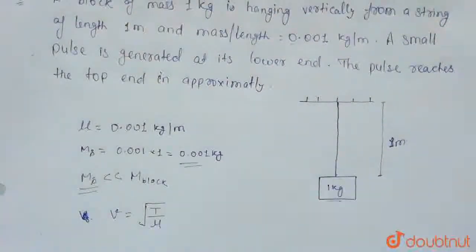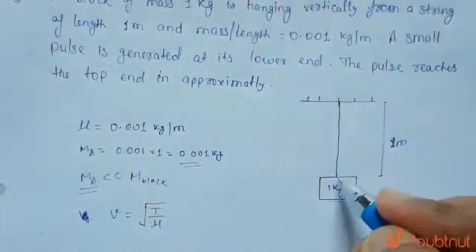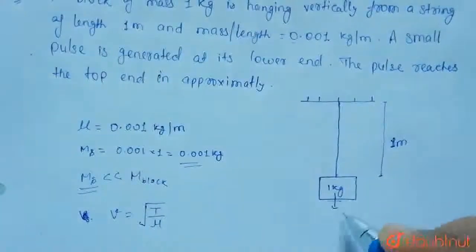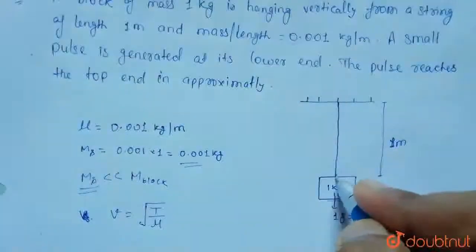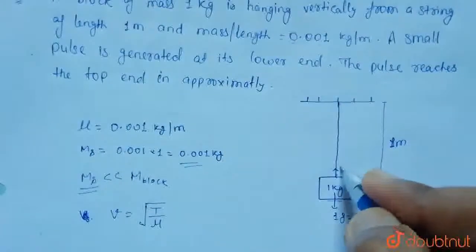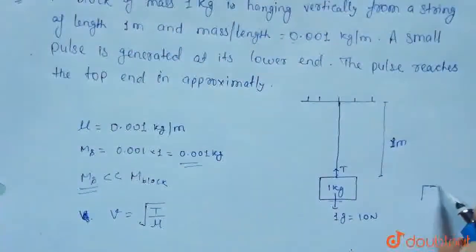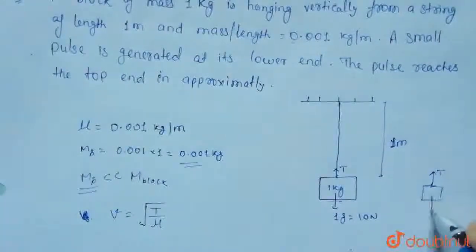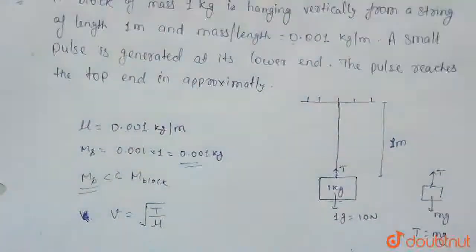इस string में tension कितना है? अगर block का FBD बनाएं, तो ऊपर tension T लग रहा है और नीचे mg लग रहा है, यानि 1g = 10 N। ये equilibrium में है, तो T = mg = 10 N। तो ये value formula में put कर देते हैं।